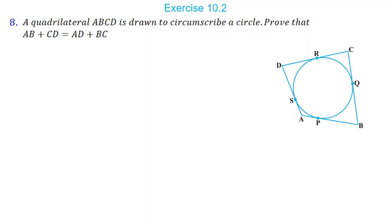The quadrilateral touches the circle at points P, Q, R, S. We have to prove that the sum of opposite sides, AB + CD, equals BC + AD. We will use theorem 2: from an external point, two tangent lengths are equal. So from point A, AP = AS; from point B, BP = BQ, and so on.